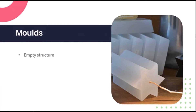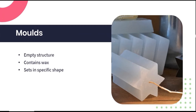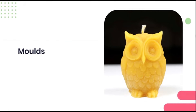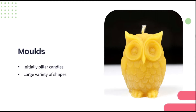Moulds are the empty structured shape used to contain melted wax in a specific form. The melted wax will set inside them in the specific shape modelled by the mould. These moulds can be made of metal, plastic, silicone and a variety of other heat and water resistant materials. Initially, moulds were very plain and mostly used to make pillar candles. Nowadays, the varieties are endless — moulds can be bought in the shape of virtually anything you want, from Christmas trees to Buddha replicas and human-formed ones too.